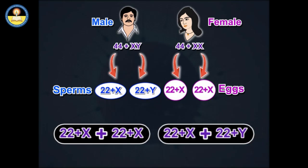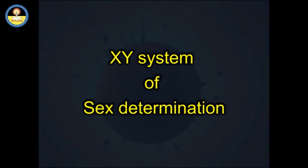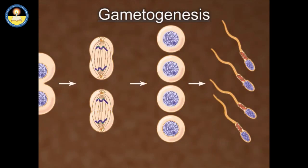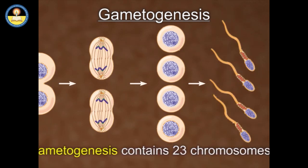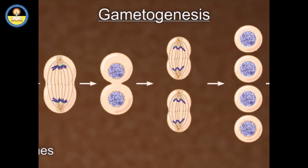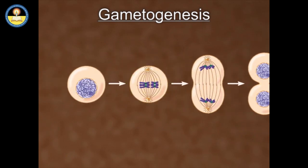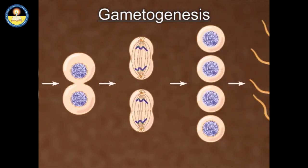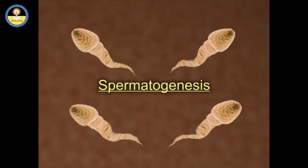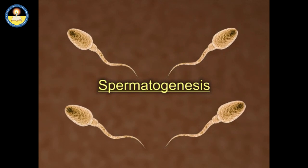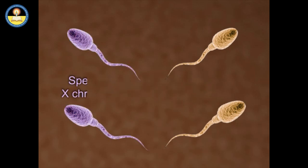XY system of sex determination. In the human male, each of the four sperm produced during gametogenesis contains 23 chromosomes. Gametogenesis is a biological process by which diploid or haploid precursor cells undergo cell division and differentiation to form mature haploid gametes. In the case of the male, this process is known as spermatogenesis, where four sperms result from each primary spermatocyte cell. Two sperms contain the X chromosome and the other two have the Y chromosome.